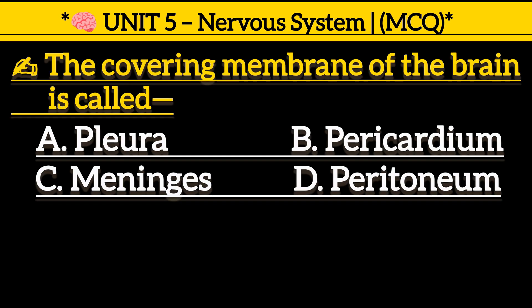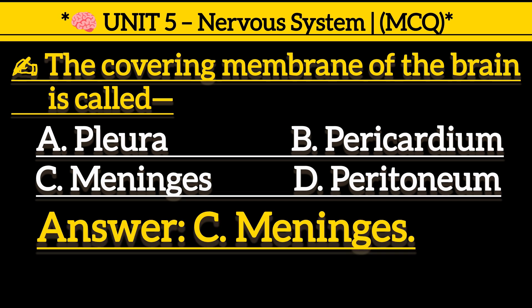The covering membrane of the brain is called: Option A, flora. Option B, pericardium. Option C, meninges. Option D, peritoneum. Correct answer is Option C, meninges.